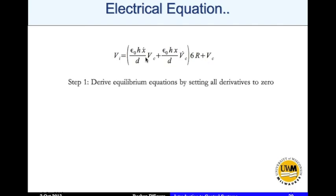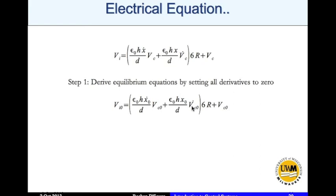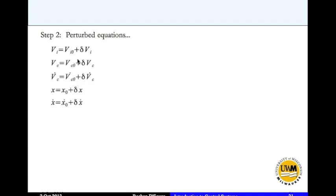To linearize the electrical equation, we derive the equilibrium by setting all derivatives to zero. At the equilibrium point, the input is vi_0, vc is vc_0, and x is x_0. Since x_dot_0 = 0 and vc_dot_0 = 0, we get that vi_0 = vc_0 — meaning the equilibrium input voltage equals the equilibrium voltage across the capacitor. We then express vi, vc, vc_dot, x, and x_dot each as their equilibrium value plus a small perturbation.